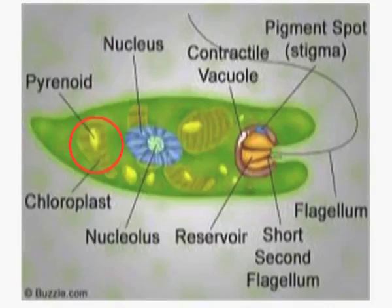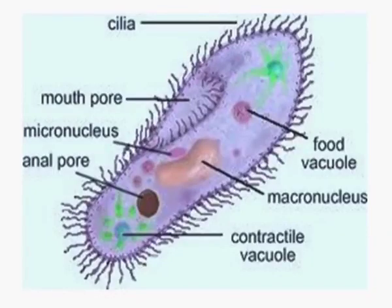Euglena is autotrophic and can manufacture its own food. As you can see in the diagram, it contains chloroplasts with chlorophyll, required for food synthesis in the presence of sunlight. Unlike Amoeba, which takes up food by forming a food vacuole with pseudopodia, Euglena has a cytostome leading into a gullet, where food is pinched off into the body as a food vacuole. Paramecium's whole body is covered by cilia, which brings about its movement.